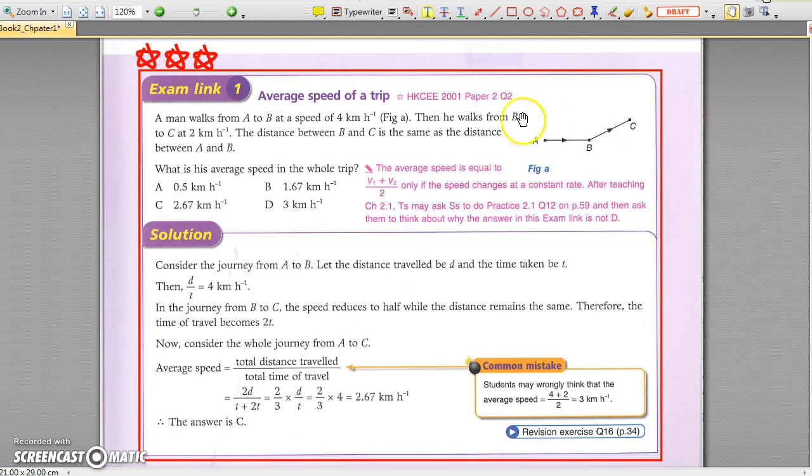In this case, a man walks from A to B at a speed of 4 km per hour and then to C at 2 km per hour. The distance AB equals BC. And then you are asked to find the average speed.